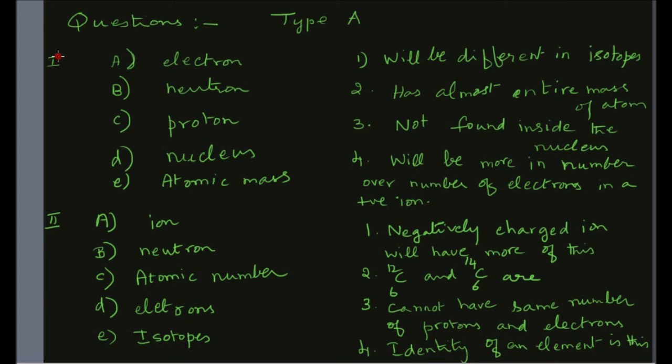I will do the first two for you. First statement: 'will be different in isotopes.' You know isotopes have the same atomic number and differ in atomic masses, so the choice will be E. Second statement: 'has almost the entire mass of an atom.' Obviously it is the nucleus, so the choice is D. You can attempt the other questions the same way. Each set has four questions, so in total you can count it as eight different questions in the actual test.